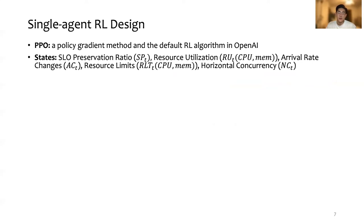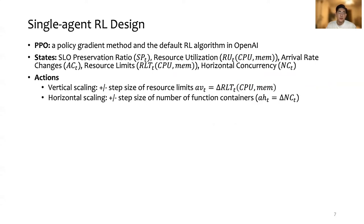We consider the following measurements as the states, including the function SLO performance, resource utilization, request arrival rate, resource limits, and the horizontal concurrency. As we mentioned in the previous slide, we consider both vertical and horizontal scaling as the actions.